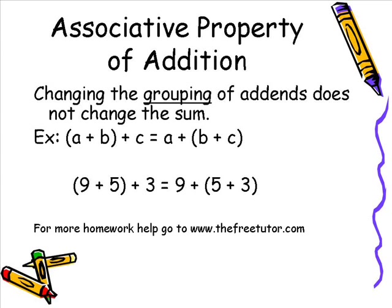Next, let's look at the associative property of addition. The associative property of addition says changing the grouping of addends does not change the sum. In algebra: (A plus B) plus C equals A plus (B plus C). For example, with numbers: (9 plus 5) plus 3 equals 9 plus (5 plus 3). The only thing that changed is the grouping, but in both instances the sum is still 17 on both sides of the equation. Changing the grouping did not change the sum.